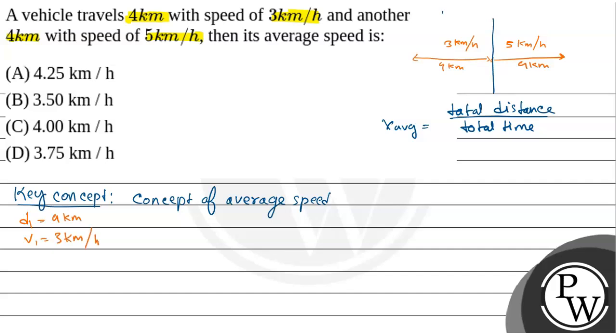Now, we know that velocity is equal to distance by time. So V1 is equal to D1 by T1. In the first case, time T1 is equal to D1 by V1, that is 4 by 3, which is equal to 1.33 hours.